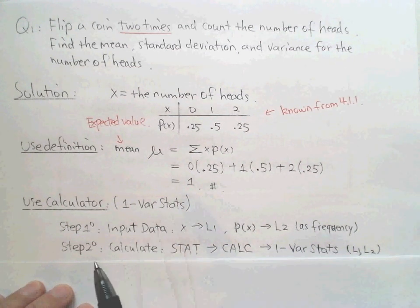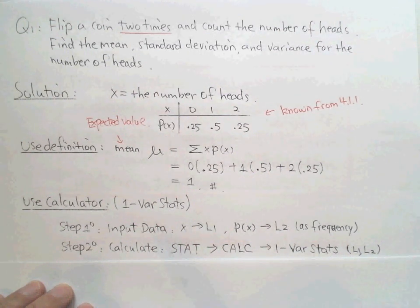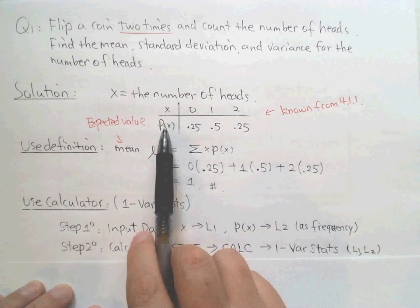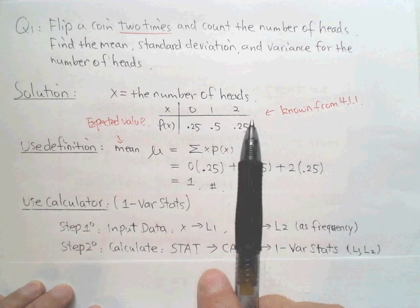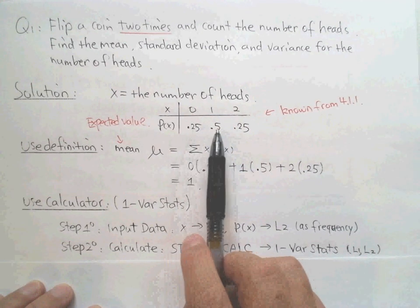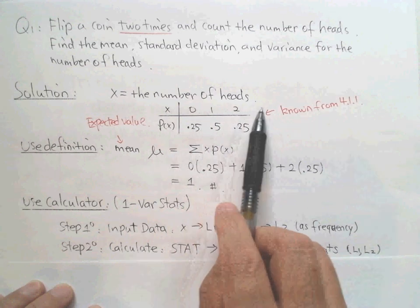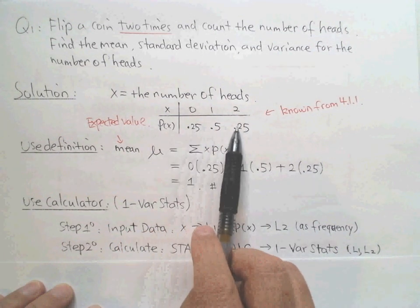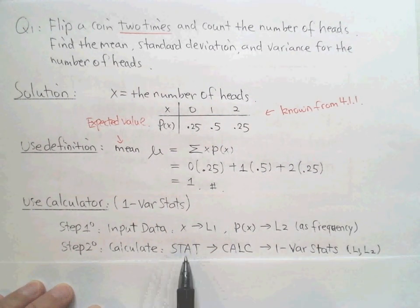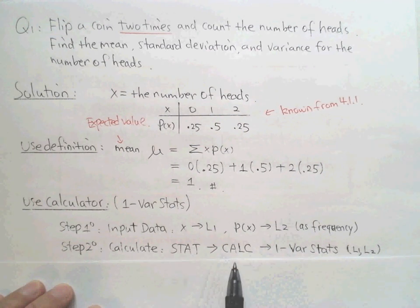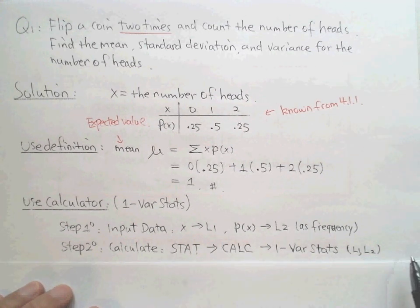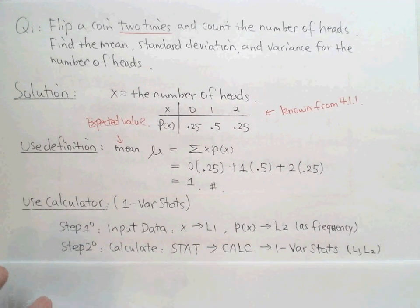We can use one-variable stats on the calculator. The first step is to input the data, and the second step is to do the calculation. Input the x values into L1 and the probabilities — treated as frequencies — into L2. Then go to STAT, go to CALC, select one-variable stats, and specify both L1 and L2. Don't miss using both lists.